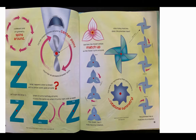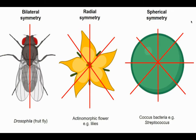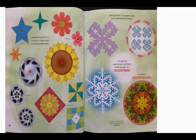A different kind of symmetry spins around. Certain shapes rotate around a center point, much like an airplane propeller spins. What happens when a shape with a center point goes around? Let's spin the Z — when it turns halfway around, it looks the same as when it's right side up. See how the flower petals match as the flower turns around? How many matches does this pinwheel have? The name for symmetry that spins around is rotational symmetry.